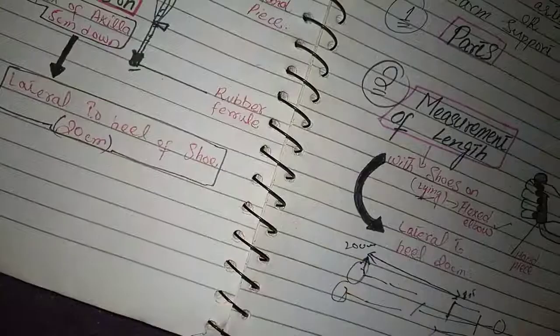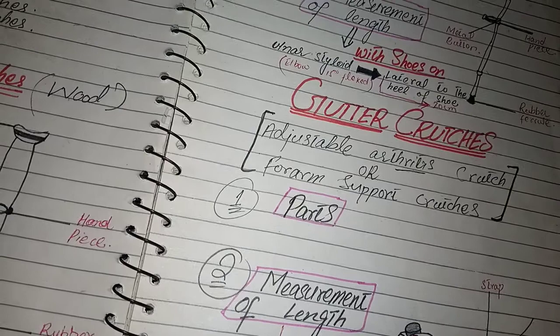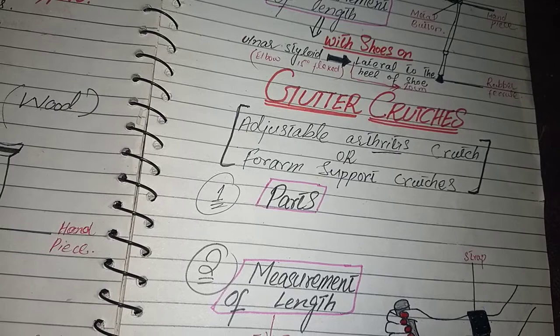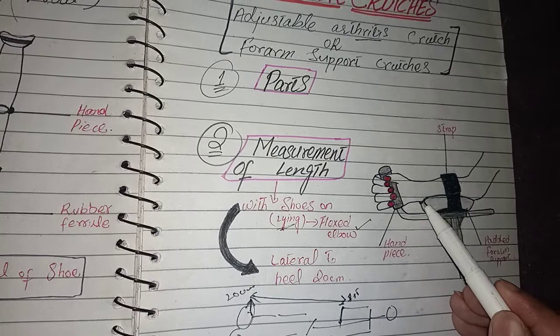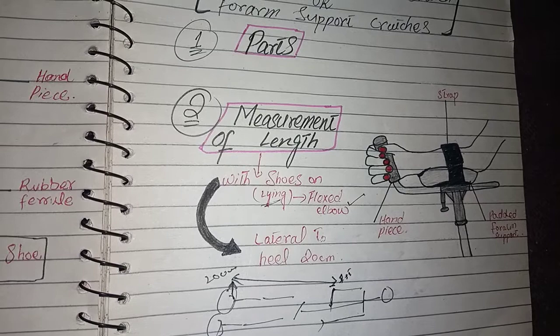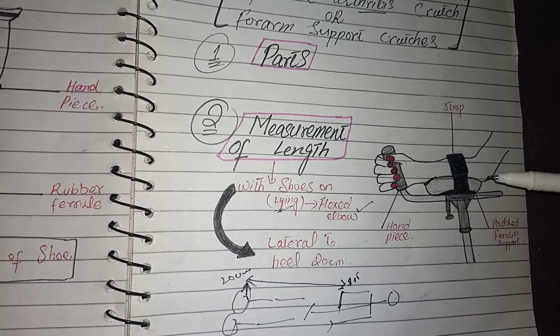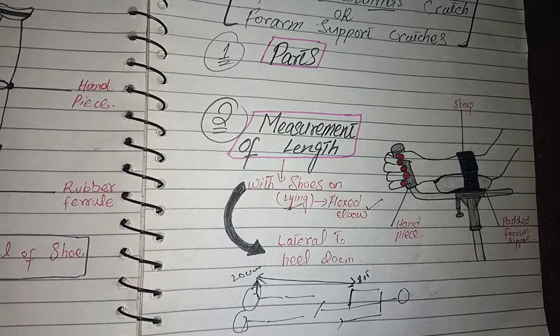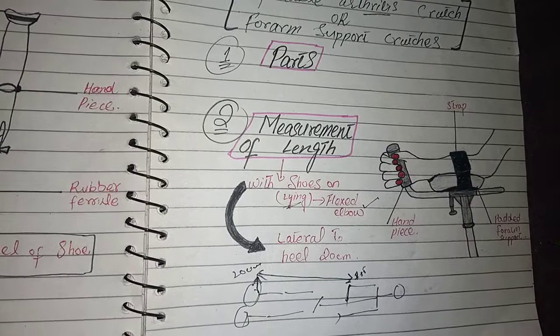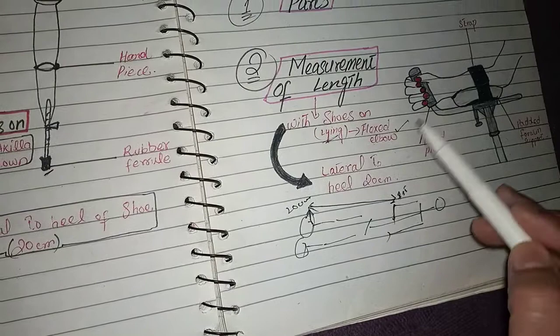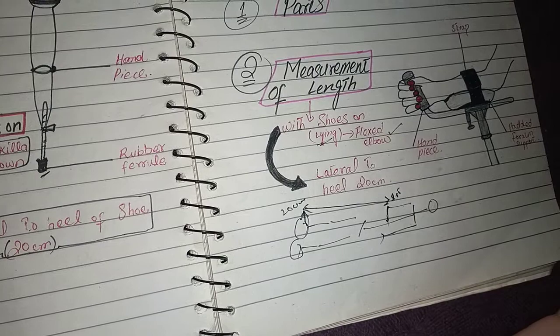Last is the gutter crutch. Gutter crutch is also called adjustable arthritis crutches and forearm support crutches, because we use a padded forearm support. This padded forearm support is for arthritic patients. If a patient has pain and stress and uses an elbow crutch or axillary crutch, we advise them to use this gutter type of crutch. It is very helpful for arthritic patients. The parts include a strap, padded forearm support, and handpiece. The measurement of length is taken with shoe on, in lying position, with the elbow flexed, and the last point is 20 cm lateral to the heel.